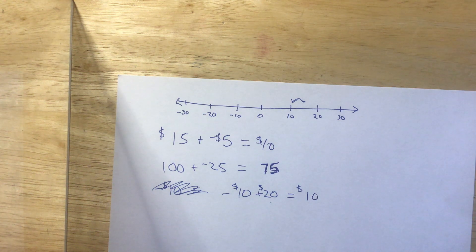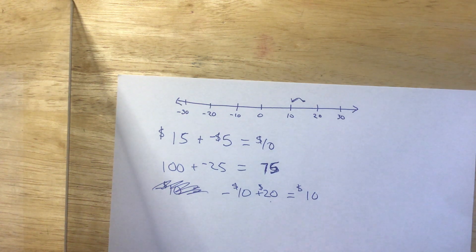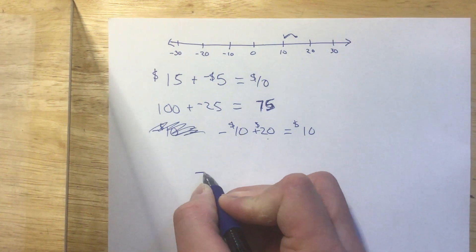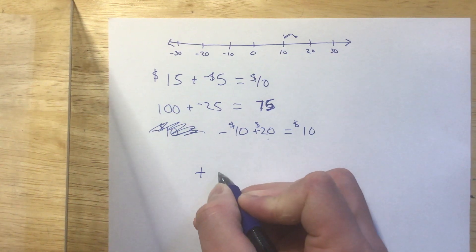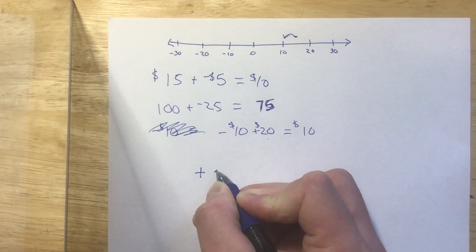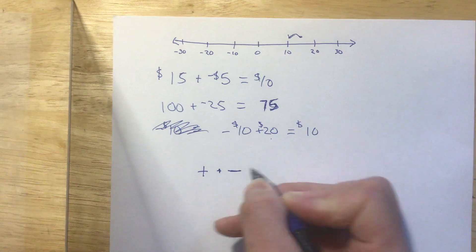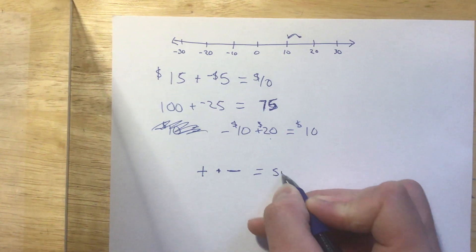So far, if you're following me, anytime we have a negative number that's being added to a positive number, no matter what order we put them in, we're basically doing subtraction. So if I have a positive number plus a negative number, it's subtraction.